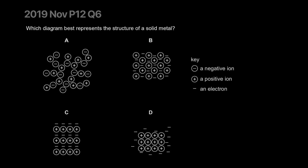Which diagram best represents the structure of solid metal? One option is just destroyed with no consistent repeating pattern. Another is a little too structured with electrons randomly moving around. The correct one shows electrons surrounding the positive ion area - so B is the correct answer.